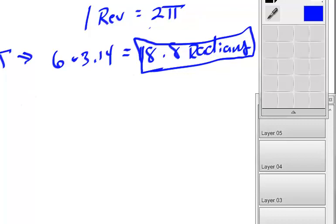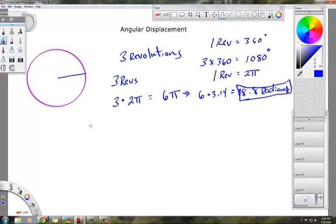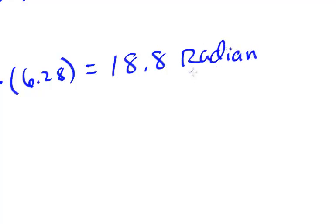I have a better way to do this, though. If your original problem looks like this, three revolutions, and it says find the angular displacement, what you do, absolute easiest way to do this is take however many revolutions it is, whether it's three revolutions, 2.7 revolutions, whatever, and multiply it by whatever two pi is as a decimal, which is 6.28. So three times 6.28 will get you very, very close to what you're looking for, which is 18.8 radians.